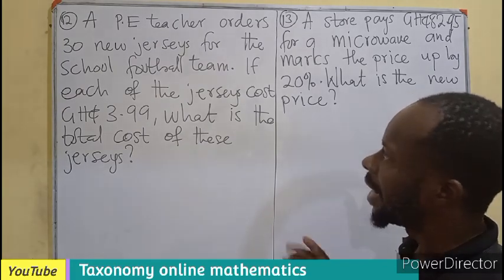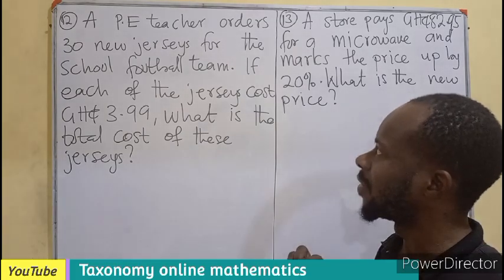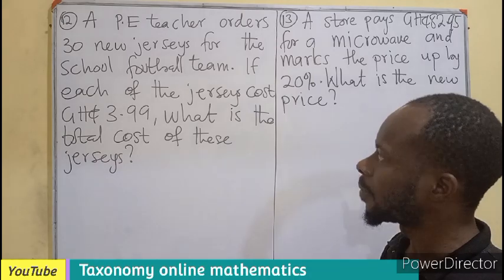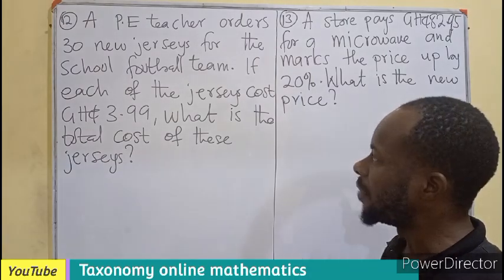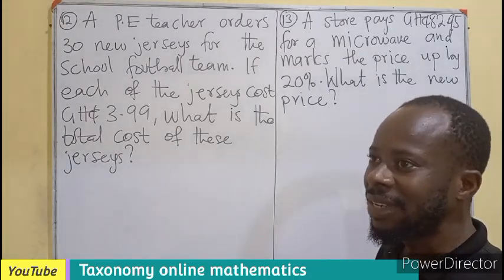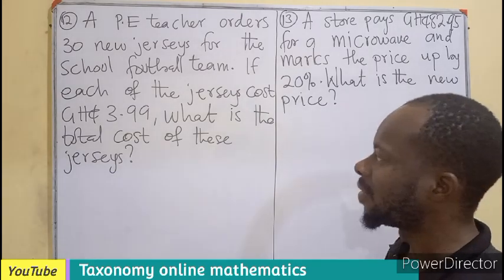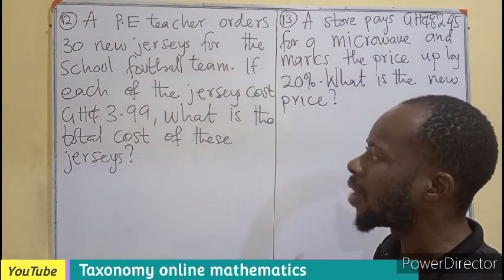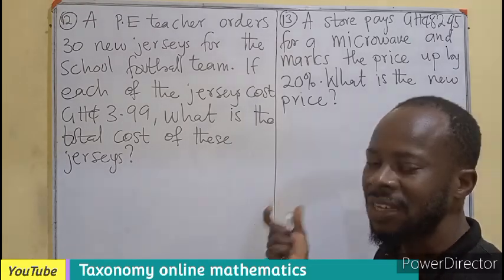A PE teacher orders 30 new jerseys for the school football team. If each of the jerseys costs 3.99 Ghana cedis, what is the total cost of these jerseys?